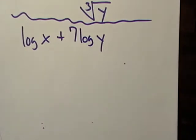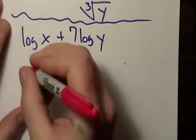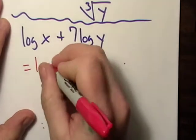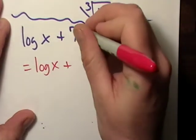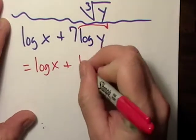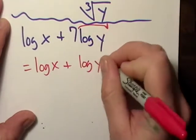Looks like we've got log x plus 7 log of y. Nothing really changes on the first term. The second one, we can use the power rule. We can just stick it back up there on top of the variable.